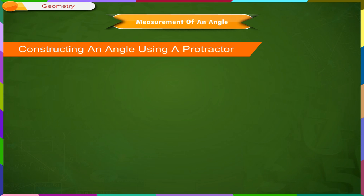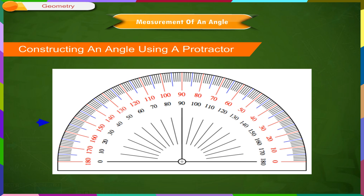Constructing an angle using a protractor. We are already familiar with the geometrical instrument called the protractor as shown on the screen. We can construct an angle of any measure from 0 degrees to 180 degrees in both clockwise and anticlockwise direction with a protractor. The clockwise scale starts from 0 degrees on the left and increases in clockwise direction and reaches 180 degrees to the extreme right. The anticlockwise scale starts from 0 degrees to the right and ends at 180 degrees on the extreme left.